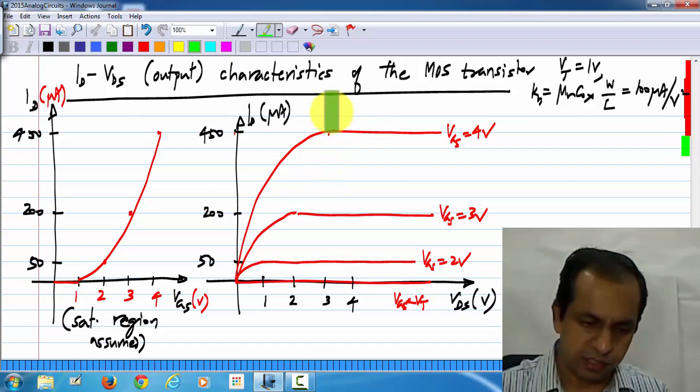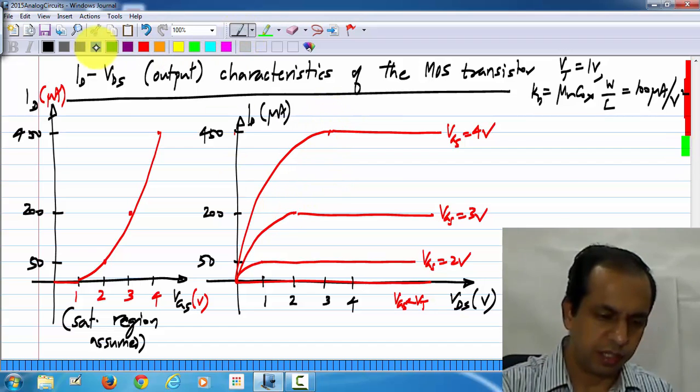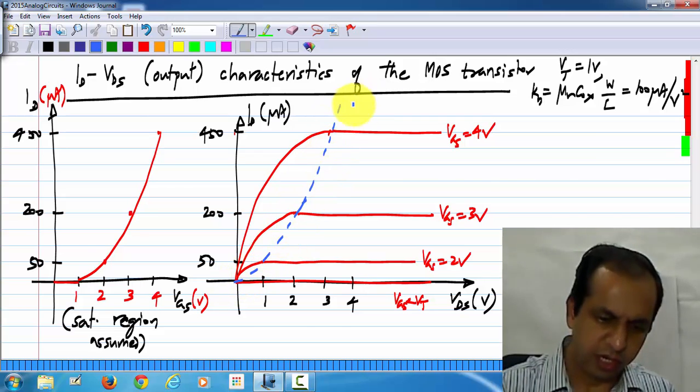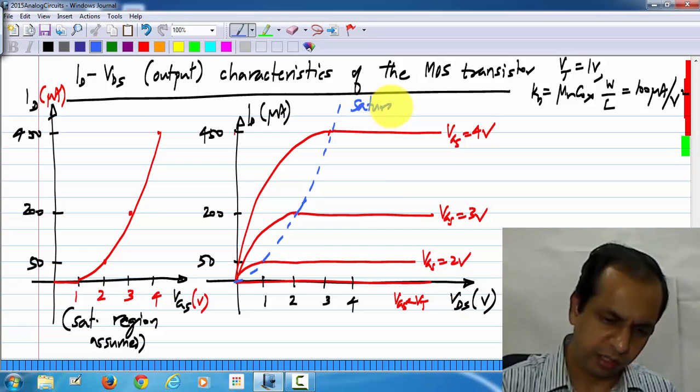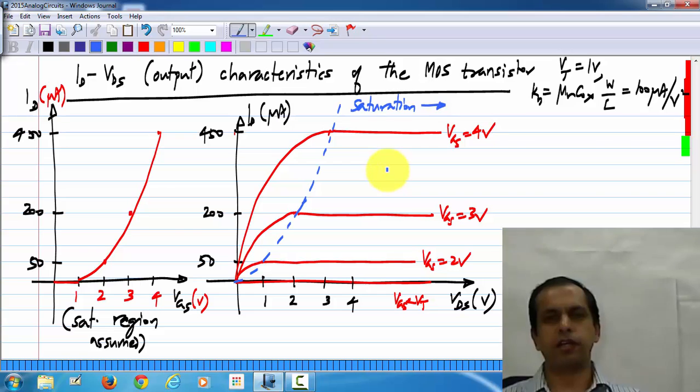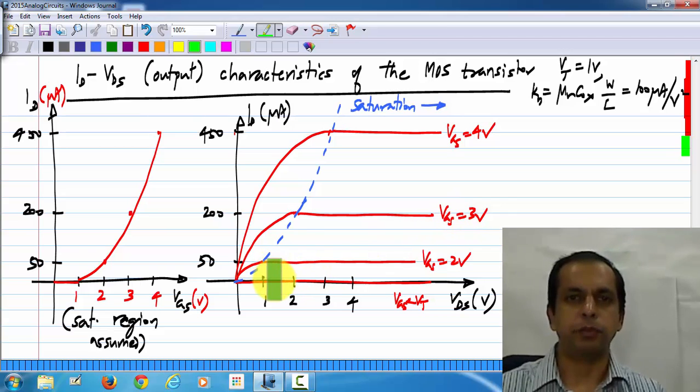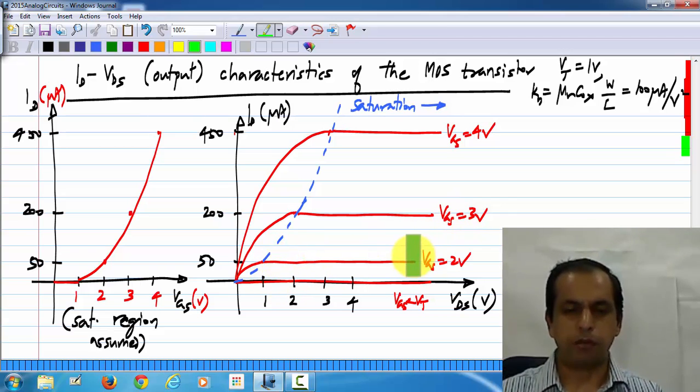The key assumption here is that in the saturation region, to the right side of this curve, there is no variation of current at all with the drain source voltage. That is, all these curves are perfectly flat, as we wanted for our amplifier to maximize the gain.